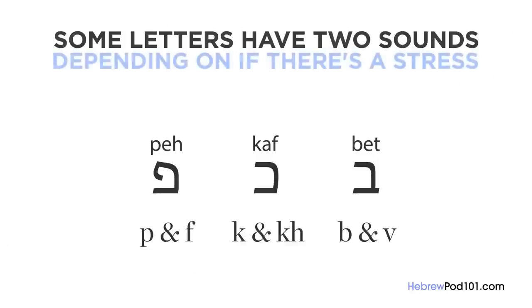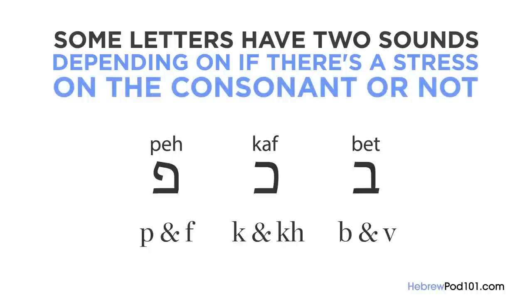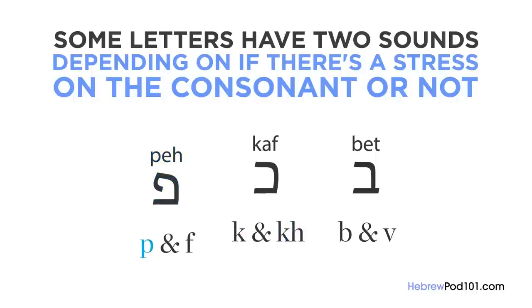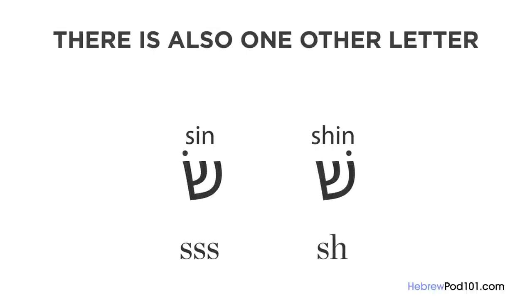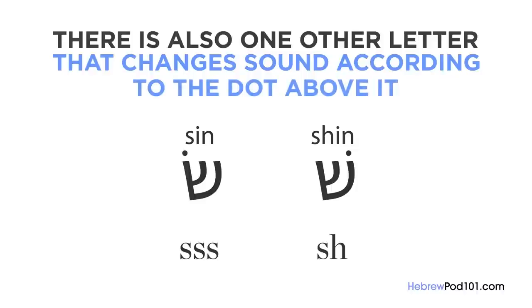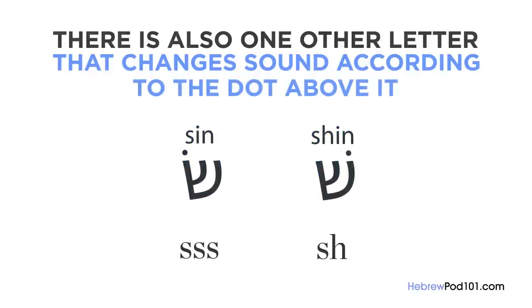Some letters have two sounds, depending on whether there's a stress on the consonant or not. There is also one other letter that changes sound according to the dot above it — that's shin and sin. It makes the 'sh' sound when the dot is on the right, and the 's' sound when the dot is on the left.